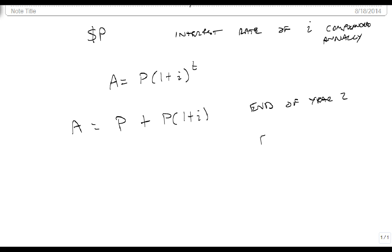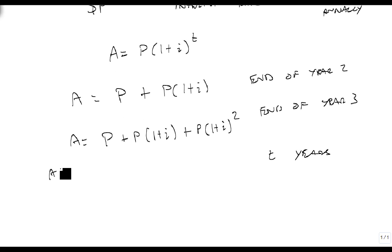At the end of year 3, we have put in a new payment, plus a single payment at 1 plus I, plus another payment that's been available for 2 years. And this goes on and on, so that at T years, the amount is equal to P plus a 1 year interest, plus a 2 year interest, all the way up to a T minus 1 year interest.